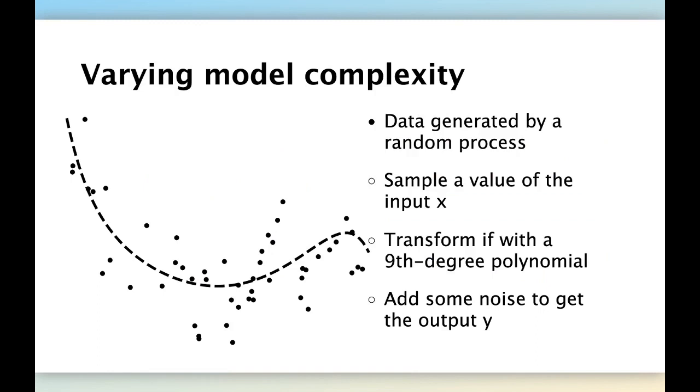To understand a bit deeper what is happening here, let's consider the generative process that we use to generate this dataset. It's a random process where first we take a value of x at random, we pick up a location of x for instance here. Then we transform x using this ground truth polynomial. It's a ninth degree polynomial, so very large degree polynomial. We transform x to this location here, and then we add some noise to get the output y. The noise is just a variation around this location here. And so here we get the observed value of y.